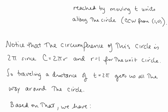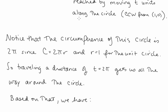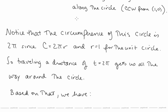Notice that the circumference of the circle is 2π, since the formula for circumference is c equals 2πr, and the radius in this case is 1. So traveling a distance of t equals 2π gets us all the way around the circle.